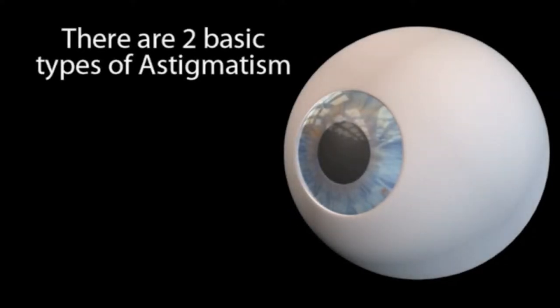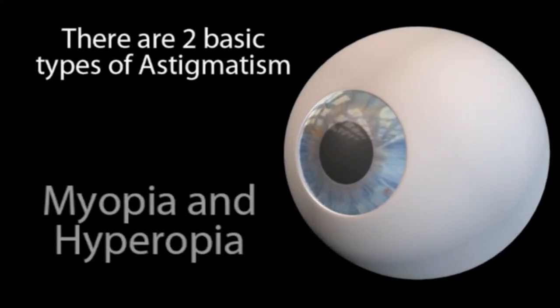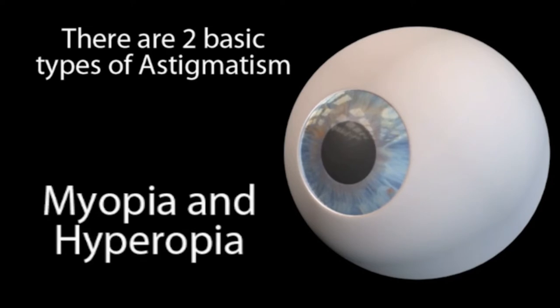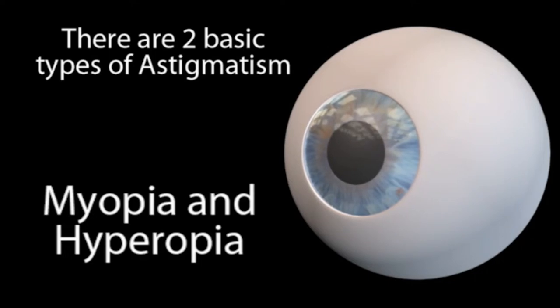There are two basic types of astigmatism, myopia and hyperopia. These two types affect up to one-third of the population and can be treated in a variety of ways from corrective lenses to surgery.